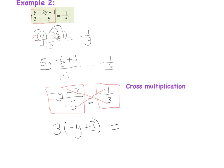That sorts out all the fractions. You can only use cross multiplication if you have one expression on each side — for instance, if you had x plus one third equals 4, you can't cross multiply because you have two expressions on the left side.